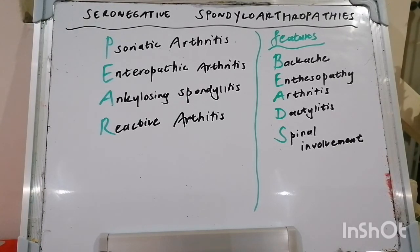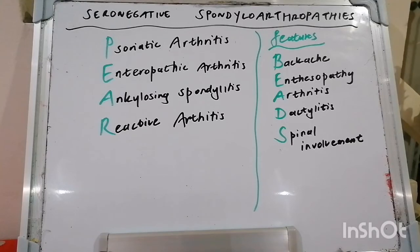How will you investigate someone in whom you suspect seronegative spondyloarthropathy? Your basics: do your labs — full blood count, differential, urea, electrolytes, ESR, and CRP — urinalysis, and rheumatoid factor, which will obviously be negative in patients with SPAs. For imaging, x-rays of the affected joints, especially the lumbar sacral spine and peripheral joints. Then special investigations — your infectious workup, because this constitutes a differential for oligoarthritis.